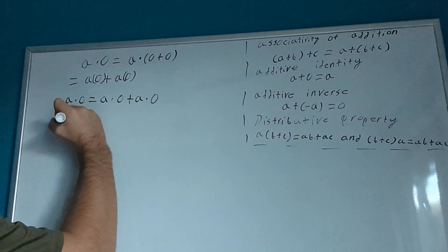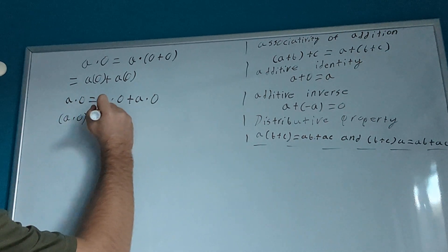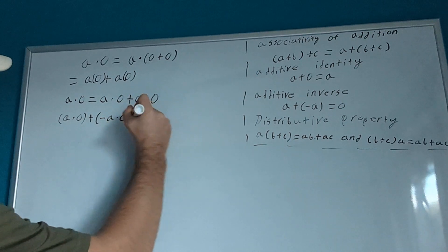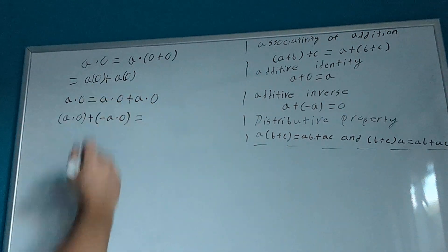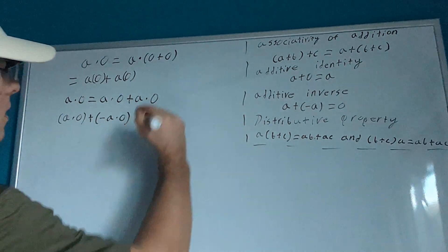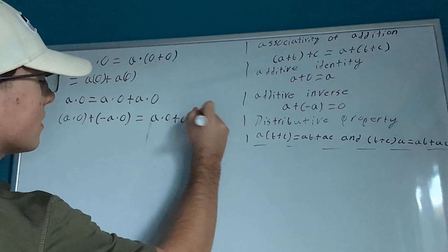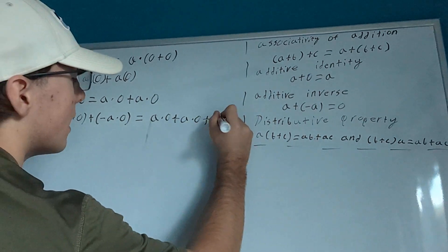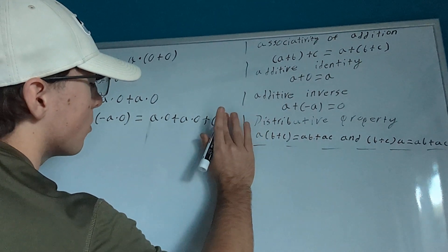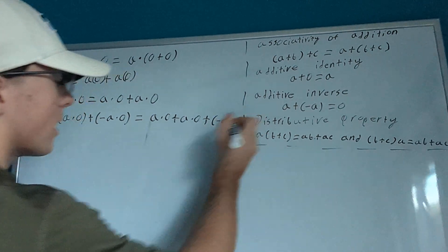So, we get negative a times 0 plus negative a times 0 equals, then this is a times 0 plus a times 0 plus negative a times 0. I didn't have a negative. Whoops. Sorry about that. Negative a times 0. Just like that.